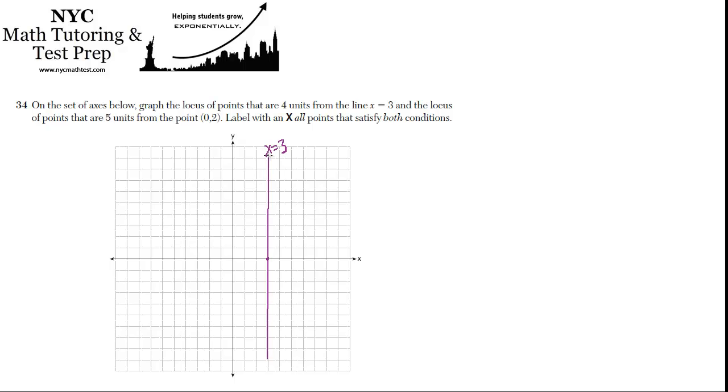And the locus of points that's 4 units from x equals 3 is everything that's over here. I'll go back just to show that darker. That's 4 units to the right, and also everything that's 4 units to the left. That's going to count as well. So that's the locus of points that's 4 units from the line x equals 3.